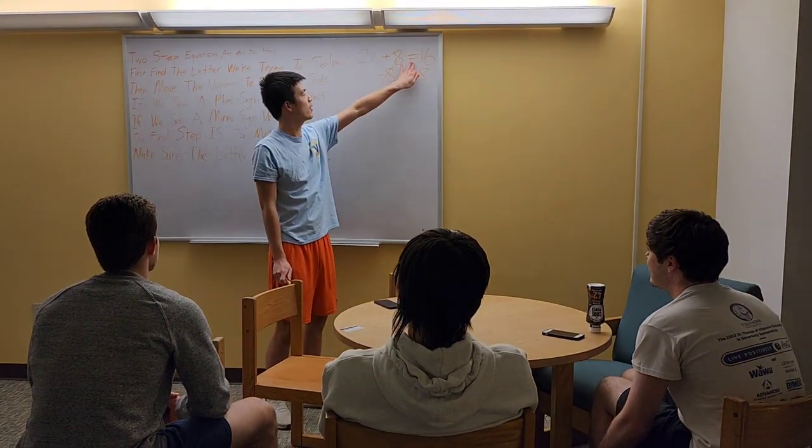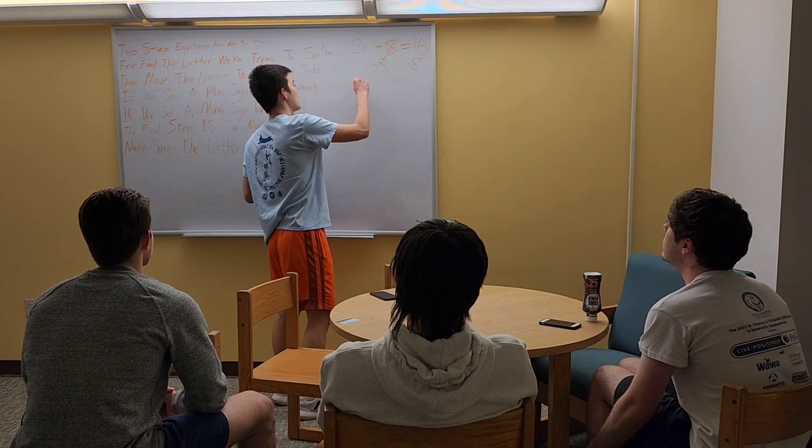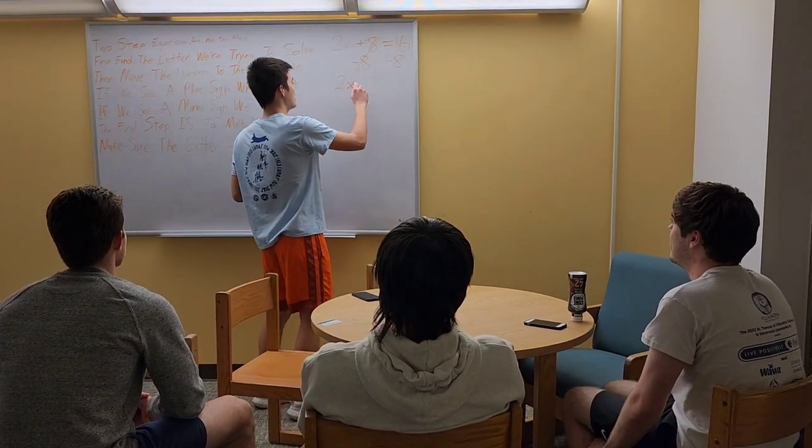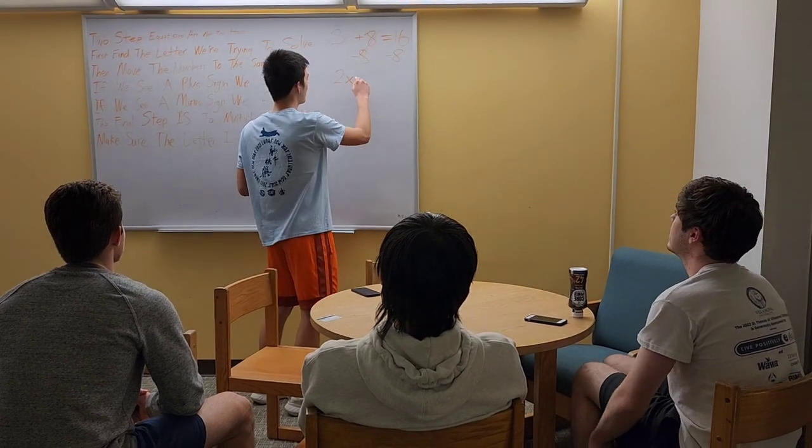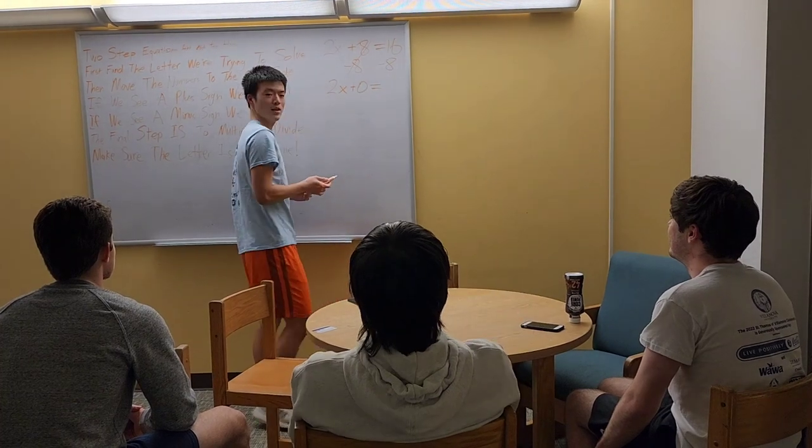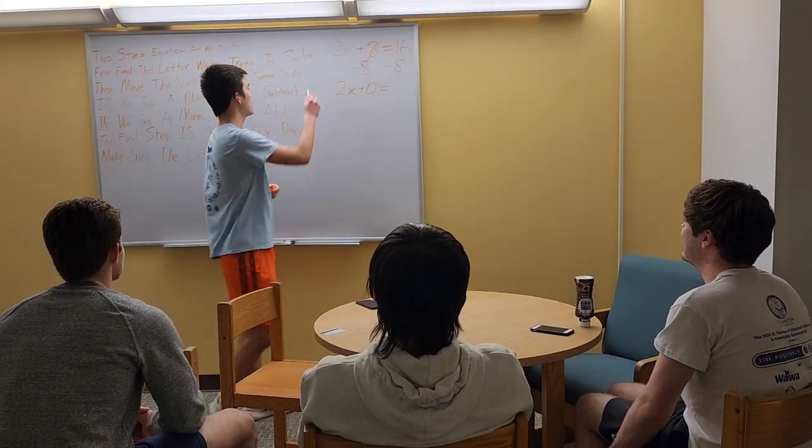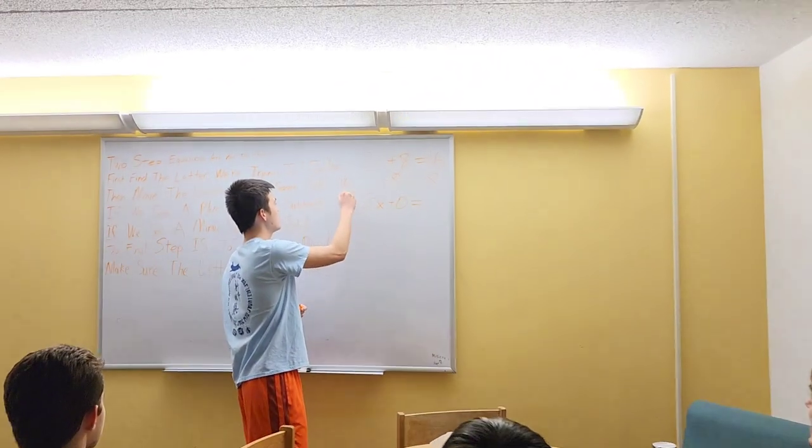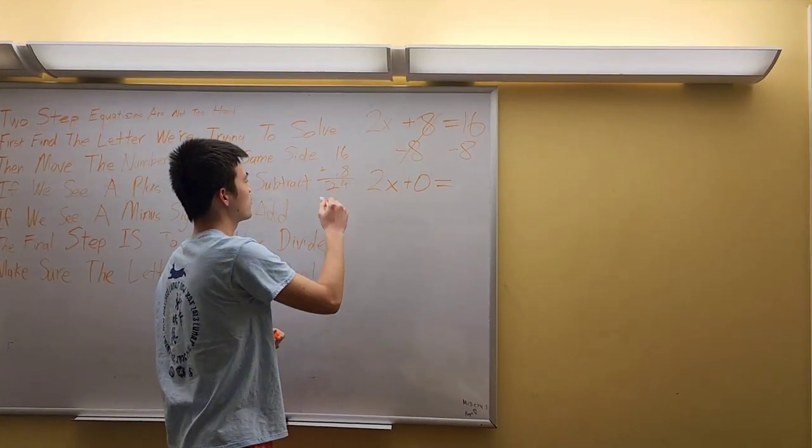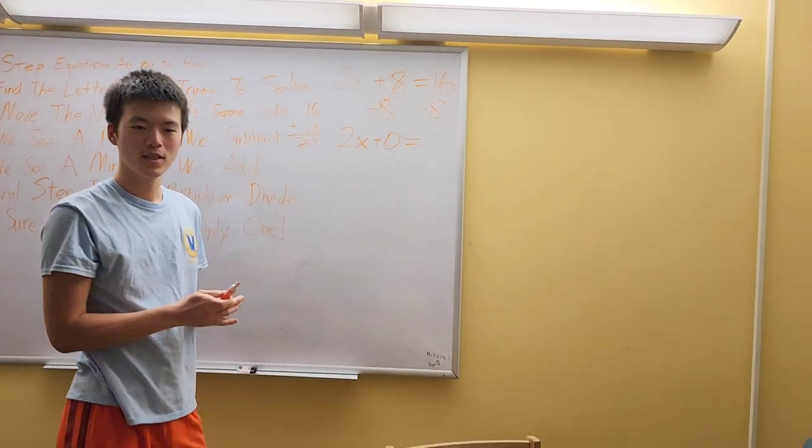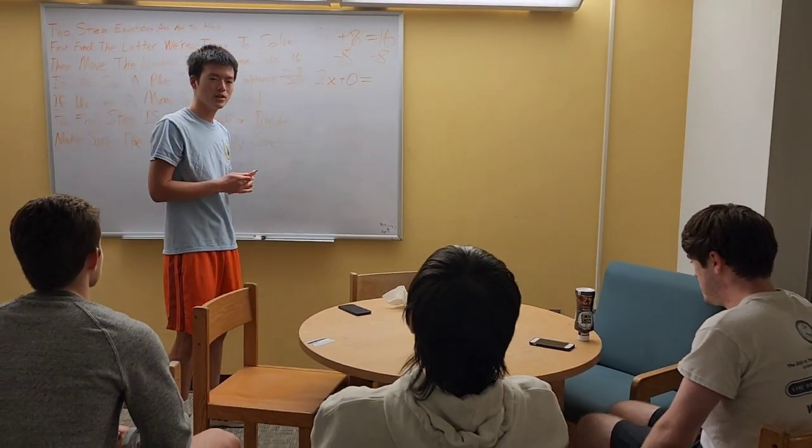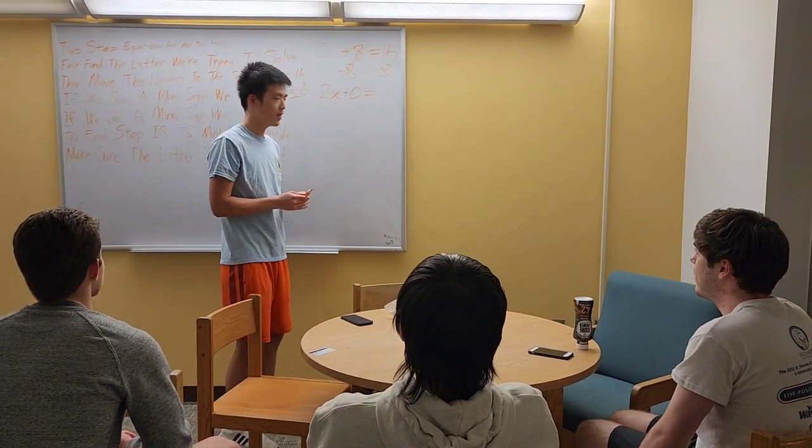And then right here, we have 16 minus 8. Eight! Great answer, Paul. So right here, if you want to write out the 0, sometimes it makes it clear for some people. For me, it helps to clear my mind out. "Why is it not 24?" 24 is if we do 16 plus 8, and then you get 24. This right here, we're subtracting. "Oh, thank you." Yeah, you do the opposite of what's in the original equation. Thank you, Mr. Lee. Yeah, no problem.